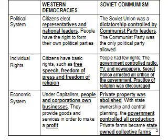Looking at a T-chart comparing the political, individual, and economic differences between Western democracies like the United States and the Soviet Union. Politically, in the US, citizens elect representatives and national leaders. People have the right to form their own political parties and basically speak their mind. Whereas in the Soviet Union, you had a party dictatorship controlled by the communist political party — the only political party allowed in the country, and any difference of opinion tended to be done away with.